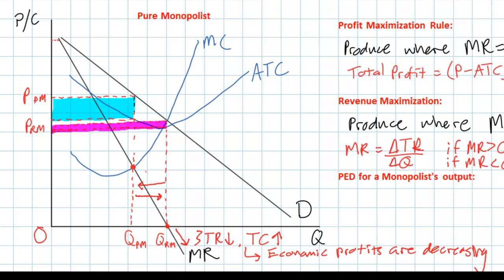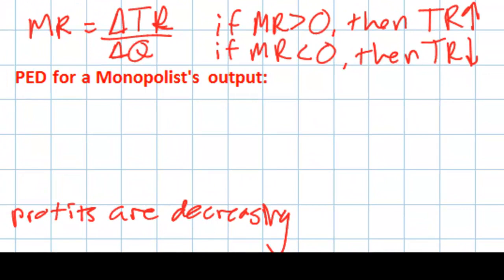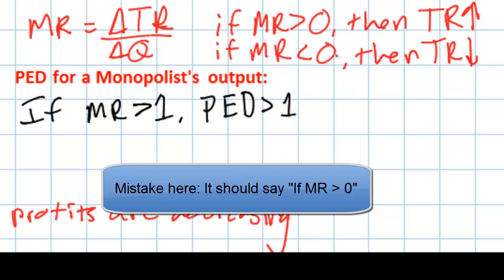Now the final thing we're going to discuss today is price elasticity of demand for a monopolist's output. Looking at a firm's demand curve, is there any way to determine over which range of output demand is relatively elastic, and over which range it is relatively inelastic? The answer is yes. If marginal revenue is greater than zero, then PED is greater than 1 — demand is elastic. If marginal revenue is less than zero, then PED is less than 1 — demand is inelastic.